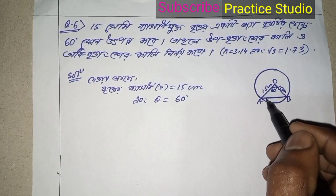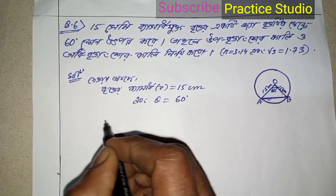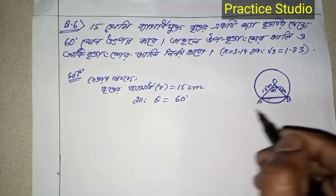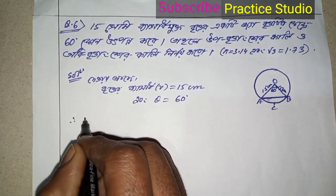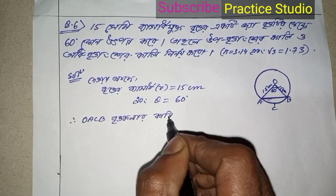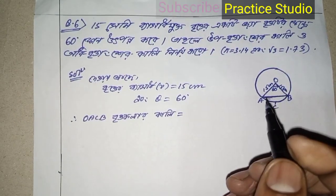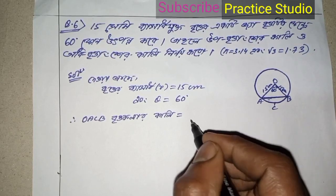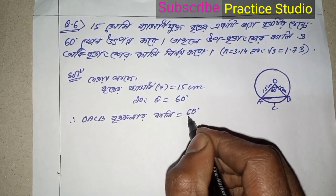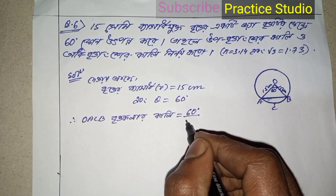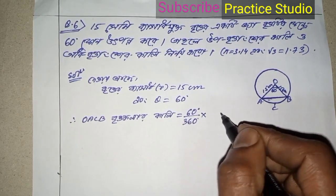Then, the first thing is the sector formula. The sector is given as cb. Using the formula: pi r squared.